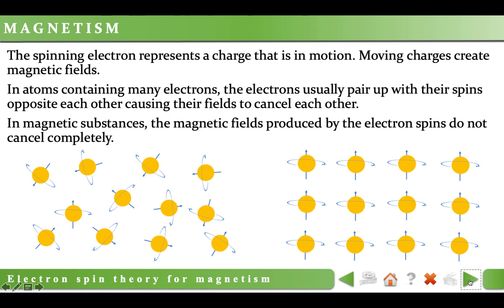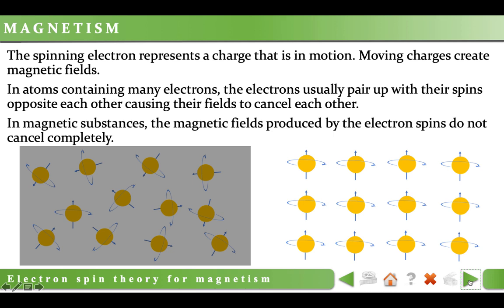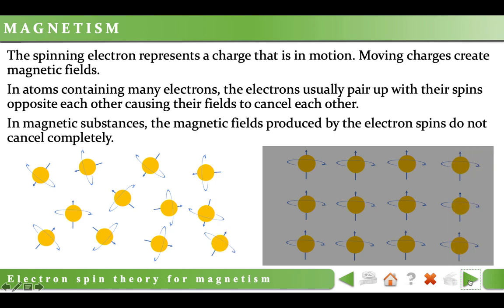The magnetic properties of many materials are explained in terms of a model in which an electron is said to spin on its axis. The spinning electron represents a charge that is in motion, and moving charges create magnetic fields. In atoms containing many electrons, the electrons usually pair up with their spins in different directions, causing their fields to cancel each other. For this reason, most substances such as wood and plastic are not magnetic. However, in materials such as iron, cobalt and nickel, the magnetic fields produced by the electron spins do not cancel completely. Such materials are said to be ferromagnetic.